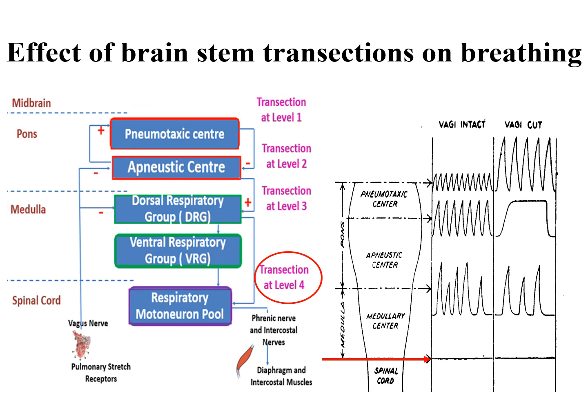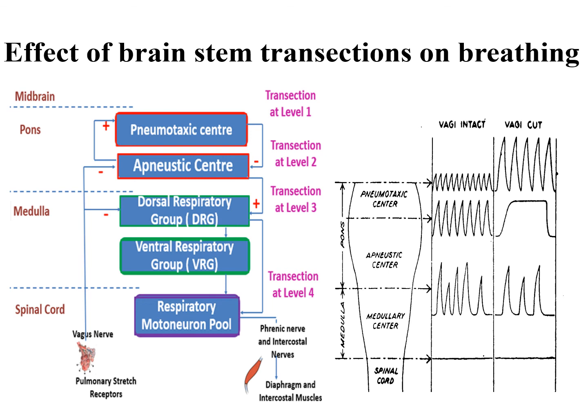Transection at level 3, between the pons and medulla, separating pontine centers from medullary centers, leads to rhythmic but irregular respiration. This proves that the medullary centers have inherent rhythmicity, which is regulated by the pontine centers. Cutting the two vagus nerves does not affect the inherent rhythmicity of the medullary centers, although breathing becomes slower. Transection at level 4 at the lower border of the medulla separates the respiratory center from the origin of the phrenic nerves in the spinal cord, leading to stoppage of breathing and death due to disconnection of the respiratory muscles from the respiratory centers. Cutting the two vagus nerves causes respiration to become slower and deeper, due to removal of vagal afferent information from pulmonary stretch receptors and disruption of the Hering-Breuer reflex.